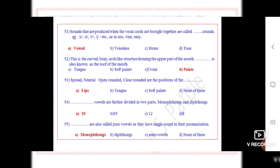Question number 55: Dot dot are also called pure vowels as they have single sound in their pronunciation. The correct option is A, monophthongs.